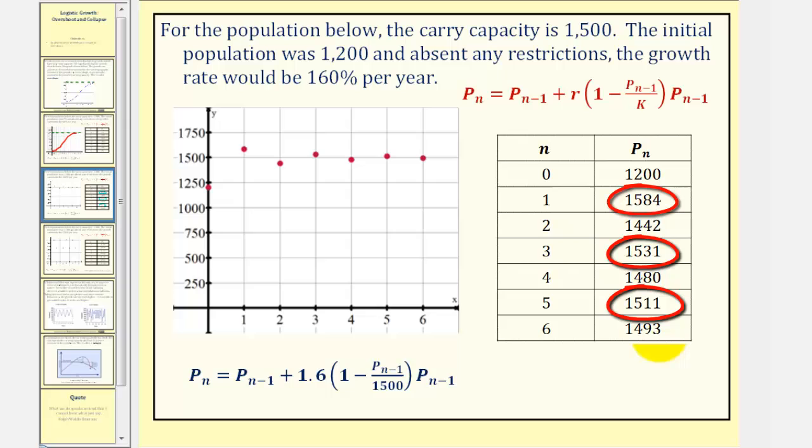But it does appear over time, the population is going to settle near the carrying capacity of 1,500. Looking at the graph, again, here's the carrying capacity. The points above this horizontal line represent overshoot. And our graph would look like this. Not the traditional graph we would expect when working with logistic growth.